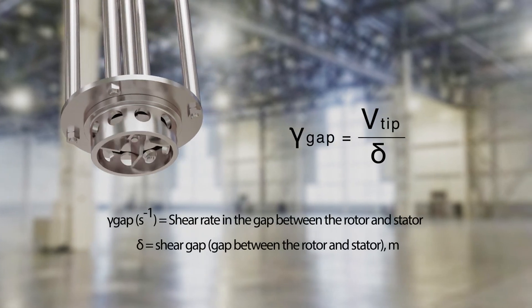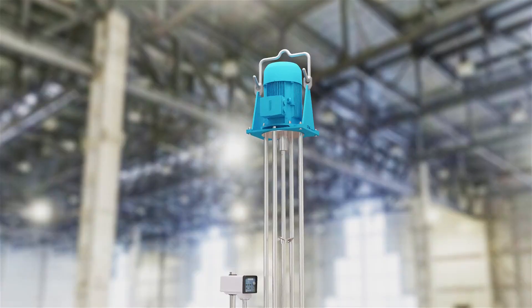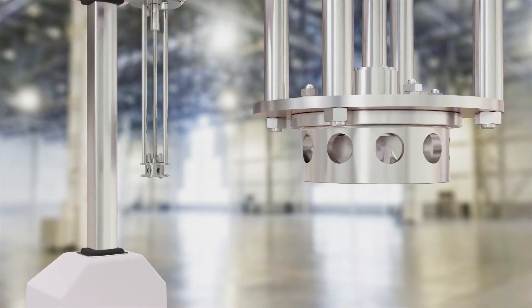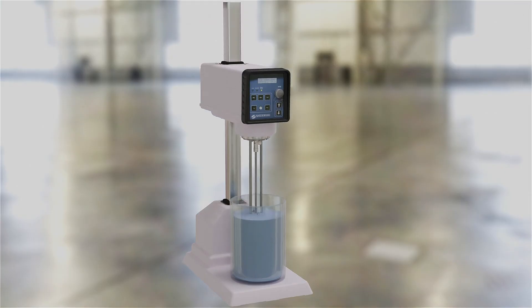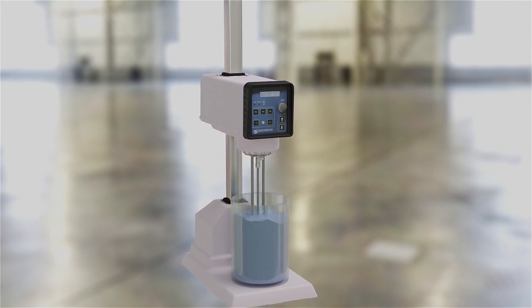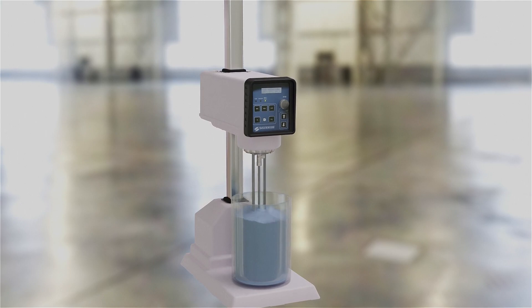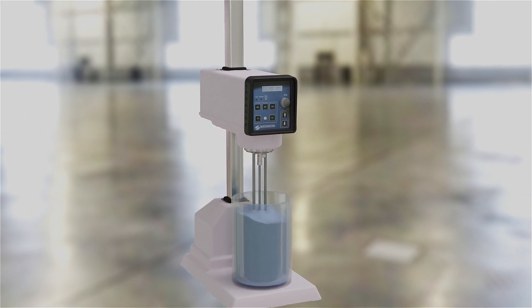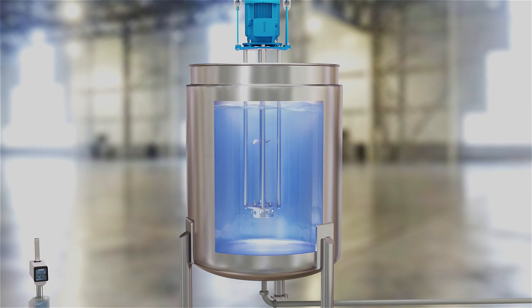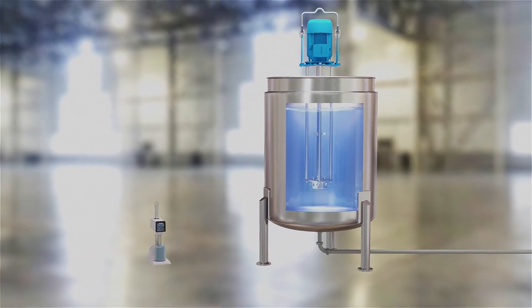This is important to consider when scaling up from the laboratory to production mixers. Some people assume that because they ran their lab mixer at 10,000 RPM they need a production mixer that runs at the same RPM. Conversely, others think running their lab mixer at the same speed as production models will replicate the performance of the larger scale mixer.